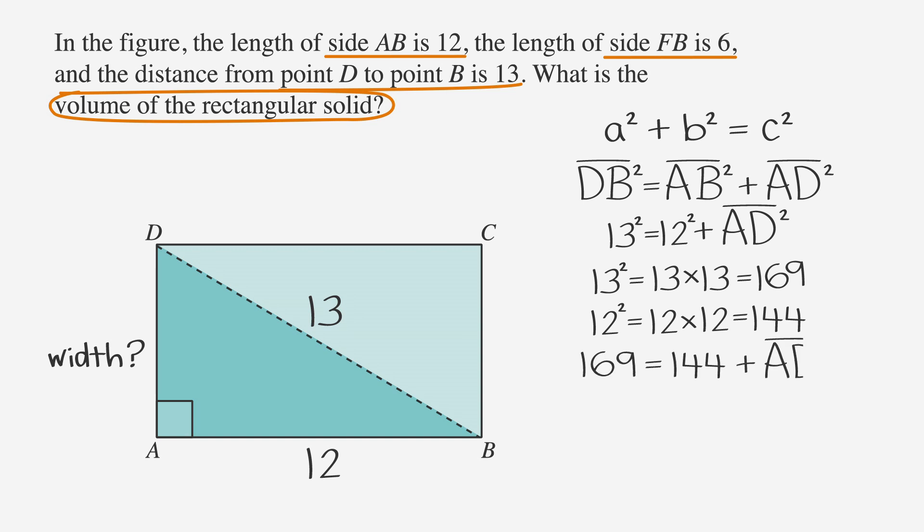So we get 169 is equal to 144 plus the square of AD. We can subtract 144 from both sides, which gives us 25 is equal to the square of AD. Taking the square root of 25, we get that 5 is equal to AD.